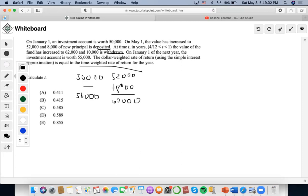Then at time t the value of the fund has increased to $62,000 and then $10,000 is withdrawn which will make the remaining $52,000 and then up until next year the funds value will be worth $55,000 which means that we're able to find our time weighted by circling these.